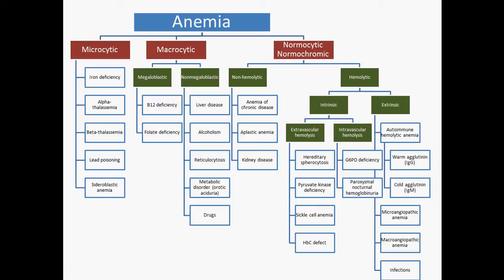We're talking about anemia, and as you can see we've got quite a few different types of anemia here — and this really isn't even the half of it, there are a lot more types of anemia, but these are the most important conditions. Anemia basically just means that you have either a low number of red blood cells or a low amount of hemoglobin in your blood.